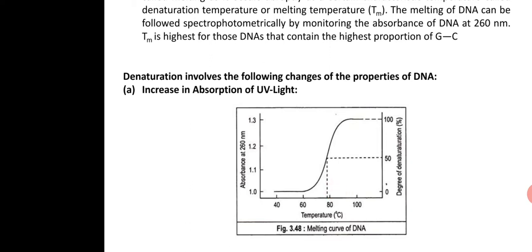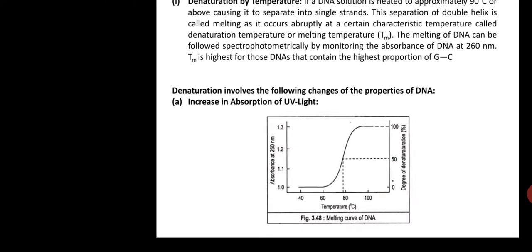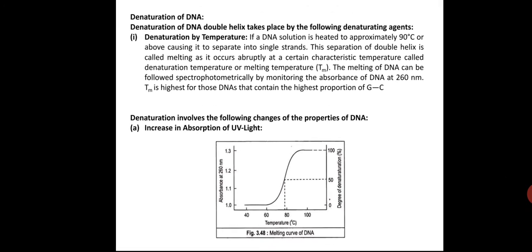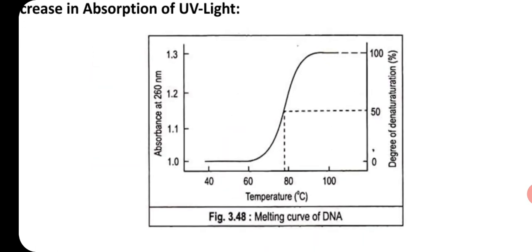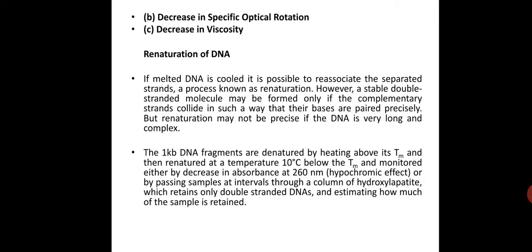This is the melting curve of DNA. When 100 percent of the DNA gets denatured, all the DNA strands' base pairs get exposed. The first thing that happens is that the absorbance increases — you can see that with the degree of denaturation, absorbance is increasing from here to here. The second thing you can observe is a decrease in optical rotation, and the third is a decrease in viscosity, because all the base pairs are now exposed.